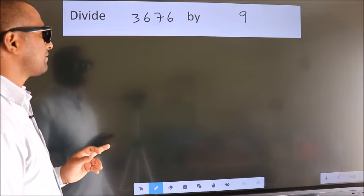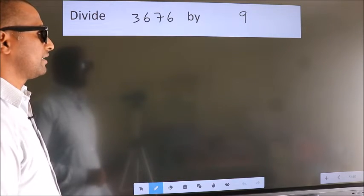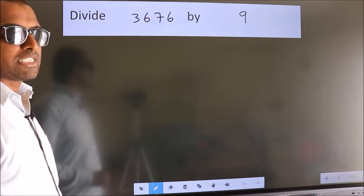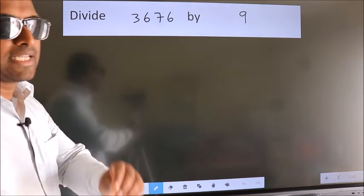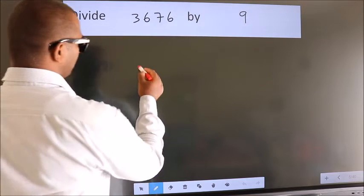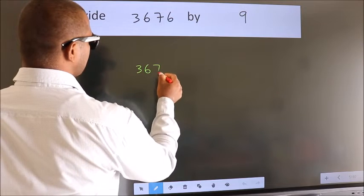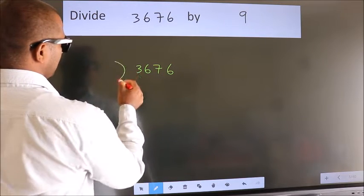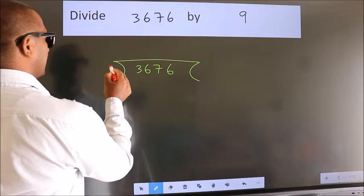Divide 3676 by 9. To do this division, we should frame it in this way. 3676 here, 9 here.